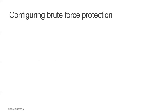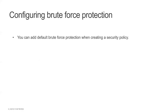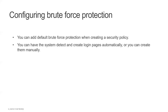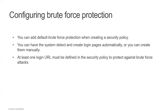To configure brute force protection, you can add the default brute force protection when creating a security policy. The policy simply needs to know for which login page to enforce brute force protection. The system creates a default brute force configuration that applies to all defined login URLs not associated with any other brute force configuration. You can have the system detect and create login pages automatically or create them manually. At least one login URL must be defined in the security policy to protect against brute force attacks. Then you can either use the default brute force configuration or create a new one.